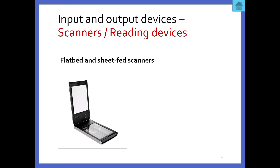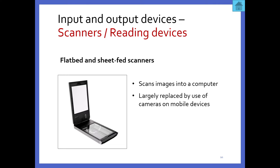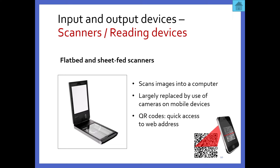There are also things like scanners — flatbed and sheet-fed scanners. They scan an image into a computer. You would put a page on the glass area, and it scans it into the computer as a digital version. You can take a large physical paper document, put it through this device, and it turns that document into a digital file that you can email or store somewhere.